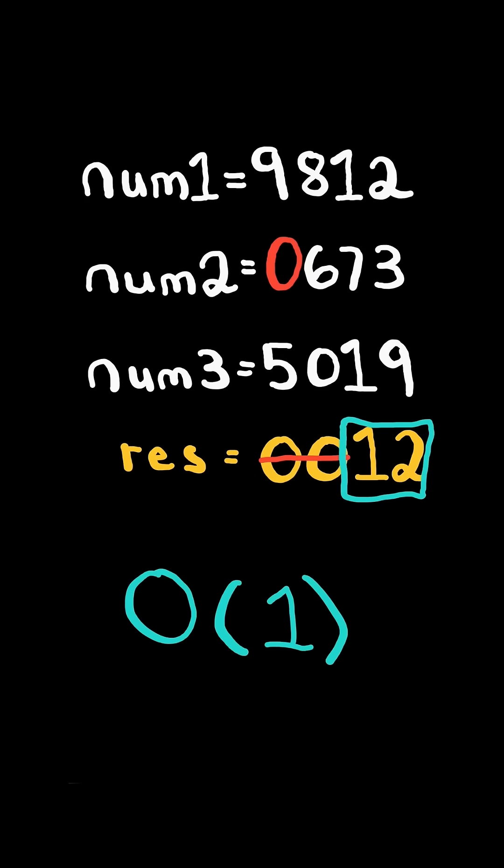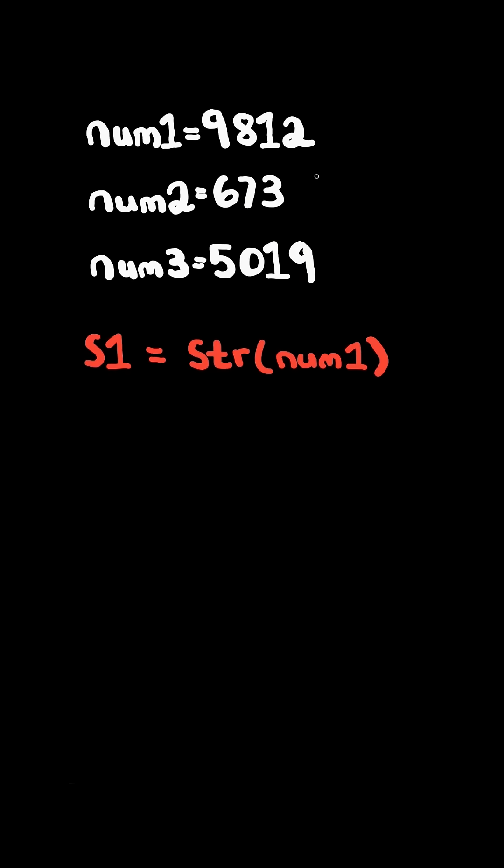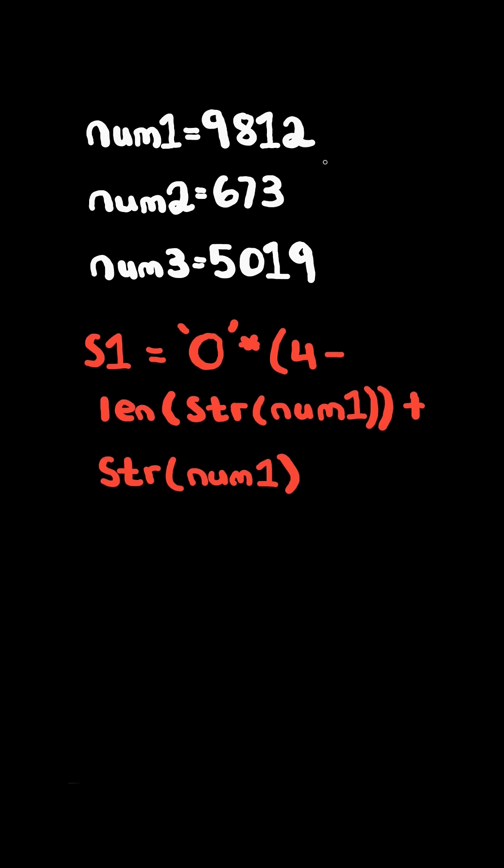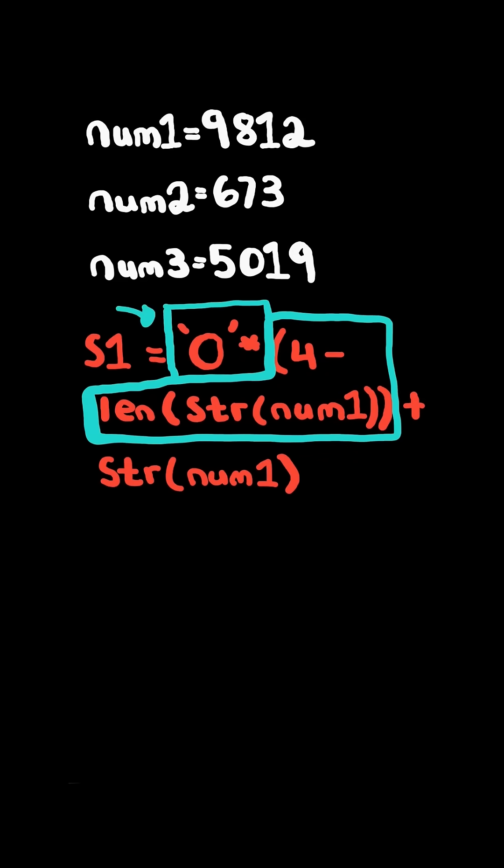We will solve this in constant time and space. We will convert num1 into a string, but we want to prepend it with leading zeros if it does not have four digits. We take four and subtract it by the length of the string. This will give us how many zeros we need to prepend, and we multiply this number with the zero string.